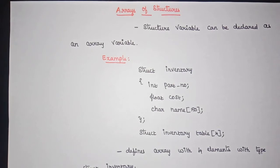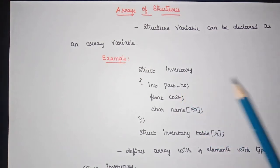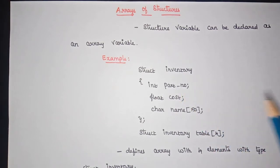We know that we use a structure variable to access and initialize the members of a structure. That structure variable can be a primitive variable or it can be an array variable. Till now we have seen an example of a structure variable which is a primitive variable. Here we are going to see an array variable — that is what an array of structures is.